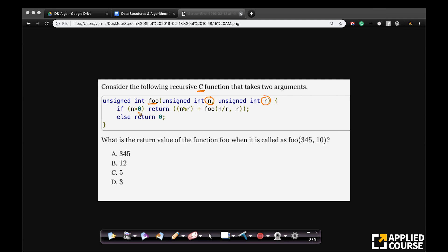The recursion says if n is greater than 0, return n percentile r. This is the modulo operator and foo n by r comma r. This is your recursive step.